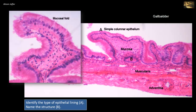Diverticuli, or crypts, form deep indentations in the mucosa, like the one shown in B. Sometimes deep crypts might extend through the muscularis externa as well, though this is not shown in this section. The presence of deep diverticuli is not considered abnormal by itself, but it can foretell some pathological changes. Bacteria might accumulate in these sinuses and cause chronic inflammation, which is a risk factor for formation of gallstones.